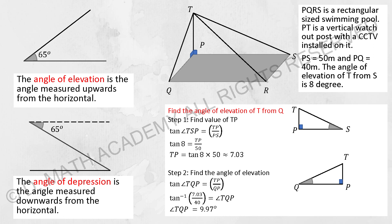And TP's value we have gotten earlier which is 7.03. Then from there we are able to identify angle TQP as 9.97 degrees. So that will be it for this particular topic, hope you find it helpful.